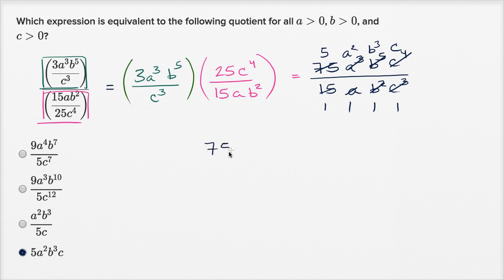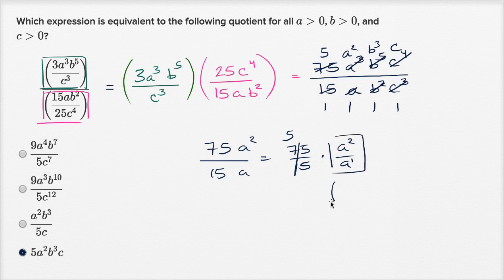Let me just do a simplified example. If I had 75 a squared over 15 a, you get the 75 over 15 part, that's going to be equal to five. I could rewrite this as 75 over 15 times a squared over a. This is five. And one way to view this is, this is a squared over a to the first. Our exponent properties tell us that this is going to be a to the two minus one power, which is equal to a to the first power.